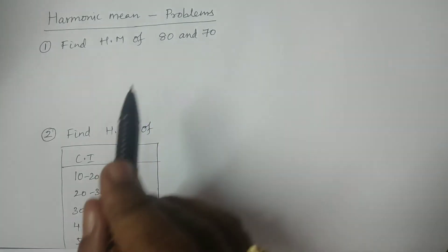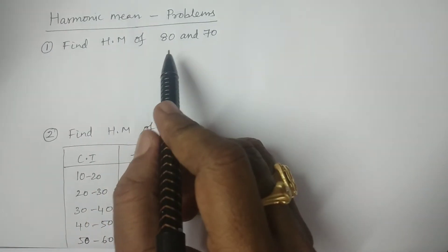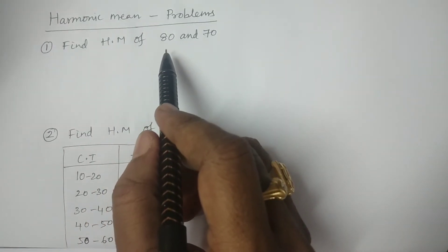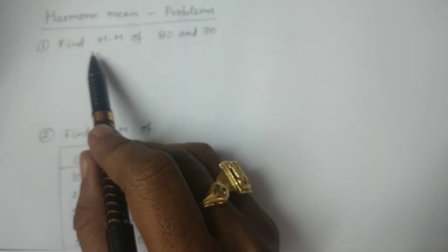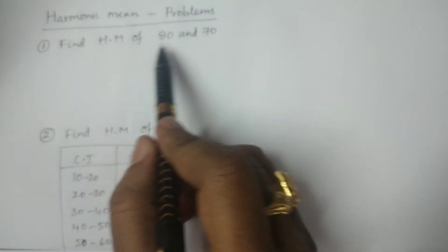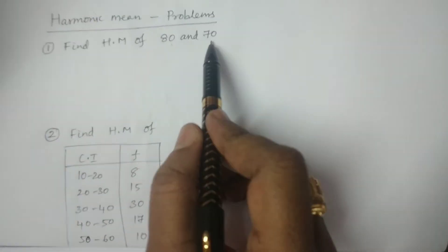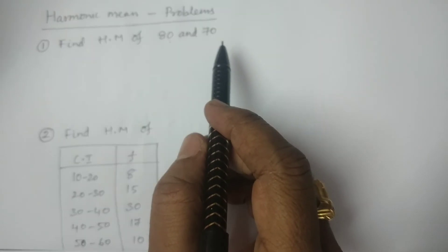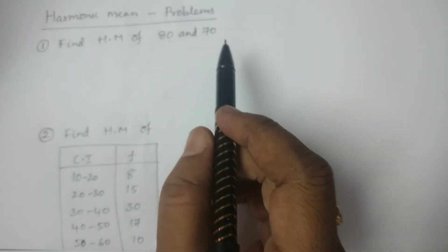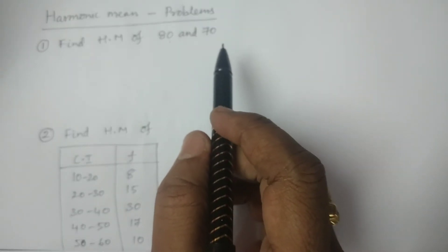This is the first problem. This is ungrouped data. Find the harmonic mean of 80 and 70 — these are the two numbers and you have to calculate the harmonic mean.